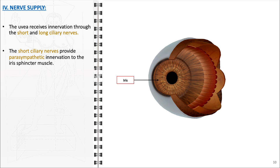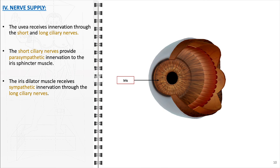On the other hand, the iris dilator muscle receives sympathetic innervation through the long ciliary nerves. These sympathetic fibers originate in the superior cervical ganglion and travel along the internal carotid plexus to the eye. Activation of these fibers results in the dilation of the pupil, allowing more light to enter or adjusting the vision for distant objects.